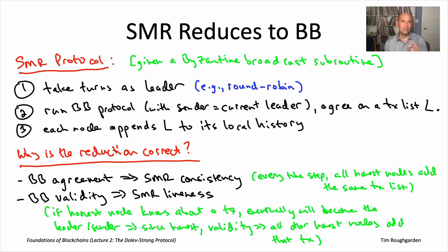This is actually really cool — we took the SMR problem, which is really multi-shot consensus coming to consensus over and over again, and we've reduced that to a seemingly simpler single-shot consensus problem, namely the Byzantine broadcast problem. I've shown you that if you give me a solution to the latter satisfying validity, agreement, and termination, we get a solution to the former satisfying consistency and liveness. Of course this reduction would be no use if we couldn't actually implement a fault-tolerant Byzantine broadcast subroutine — so that's the next order of business, bringing us to the Dolev-Strong protocol. But before the final solution, I want to build up your intuition for what's hard about designing fault-tolerant protocols, and we'll do that in the next video.